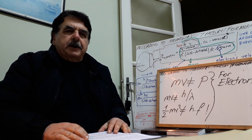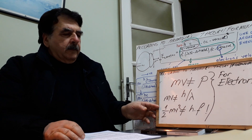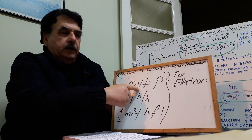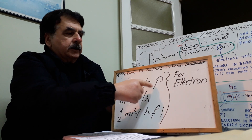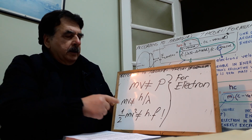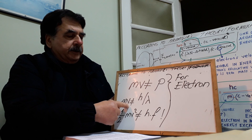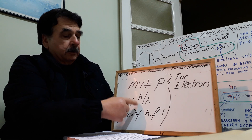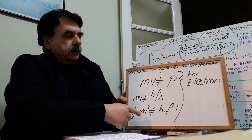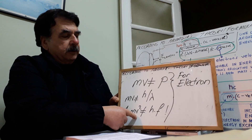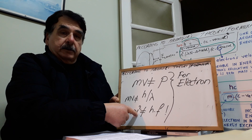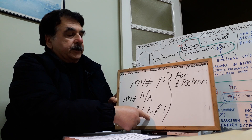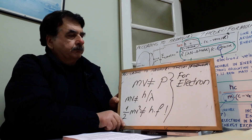According to my theory and my formulas, mass multiplied by velocity of electron is not equal to momentum. Mass multiplied by velocity of electron is not equal to h divided by lambda, the wavelength. Also, one half times mass times the square of velocity of electron is not equal to h·nu.